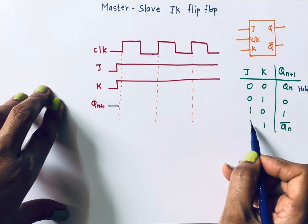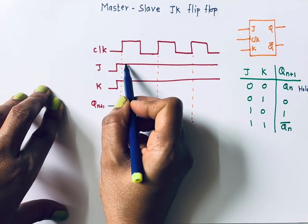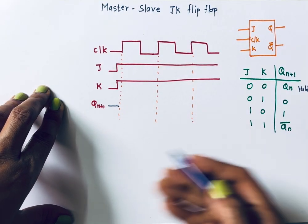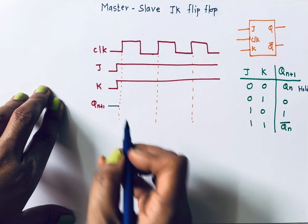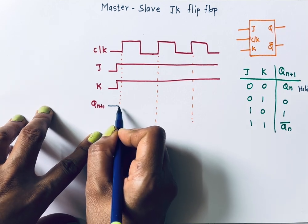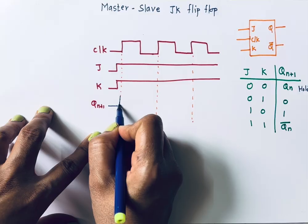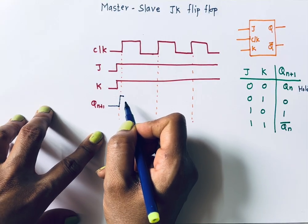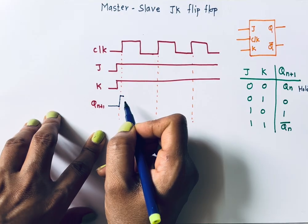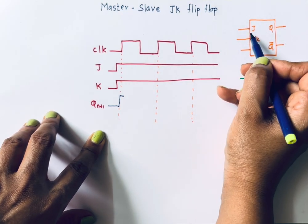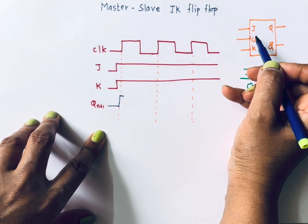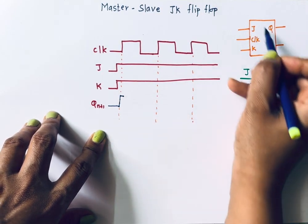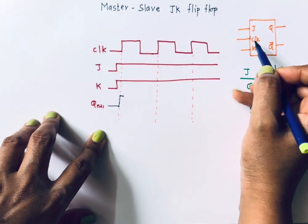According to this, initially let's assume the output is zero. When the positive level comes, clock, J, and K are all one. Since J and K are both one, the next state output is the complement of the present state output. My present state output is zero, so the next state output will become one. But in the JK flip-flop there is a feedback from the output to the input side, and because of this feedback, this changed output comes back to the input side.